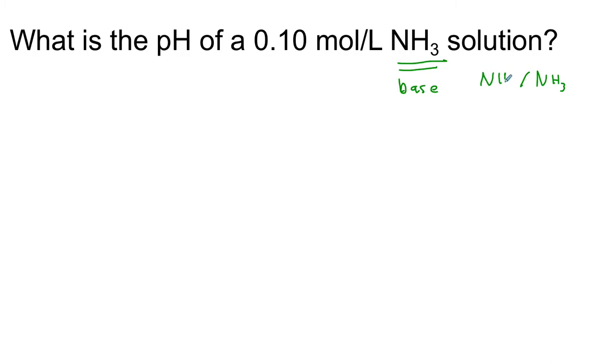So we need to add an H⁺ to our base which gives us ammonium. So we're going to have to look up the Ka for ammonium and convert it into the Kb for this question. So the Kb is going to equal Kw divided by the Ka of the conjugate.